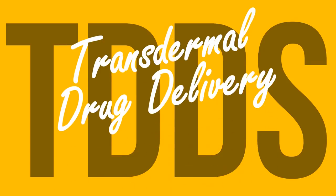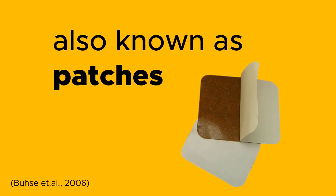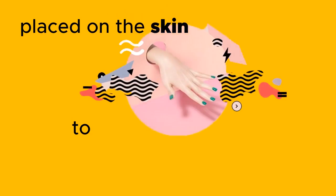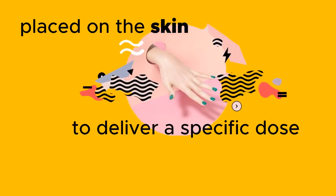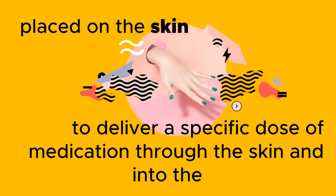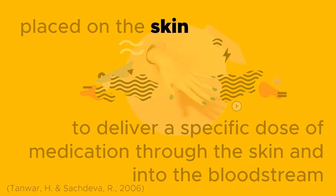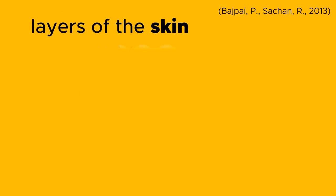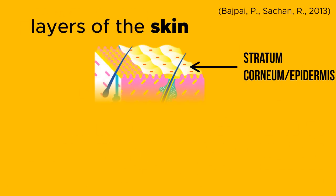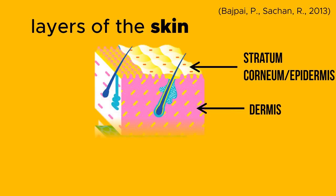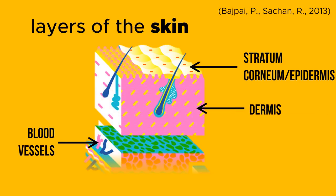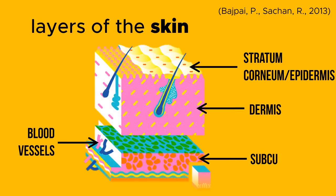TDDS, transdermal drug delivery system, also known as patches, are placed on the skin to deliver a specific dose of medication through the skin and into the bloodstream. TDDS involves layers of the skin: the outermost layer is the stratum corneum or epidermis, the layer below this is the dermis, and there are also blood vessels in the subcutaneous layer.